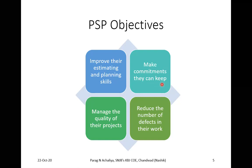You should only give commitments which can be fulfilled. Number 3 — Manage the quality of their products. The quality of the project must always be in an improving state; the graph of quality should always be in increasing order. Number 4 — Reduce the number of defects in the work, because quality is achieved only by reducing defects.